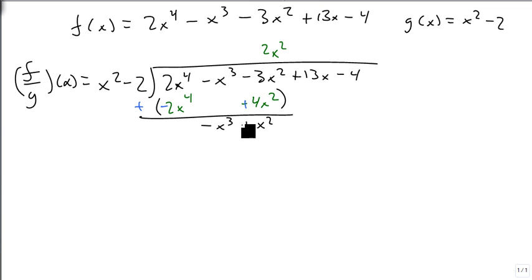We then bring down minus x cubed and positive 13x. X squared goes into minus x cubed minus x times, which gives minus x cubed plus 2x. When we add those together after changing their signs, we get 0.